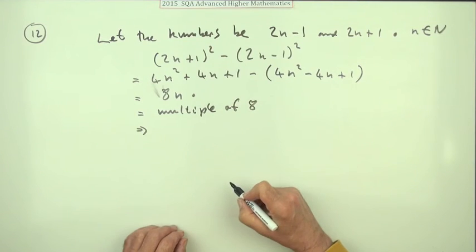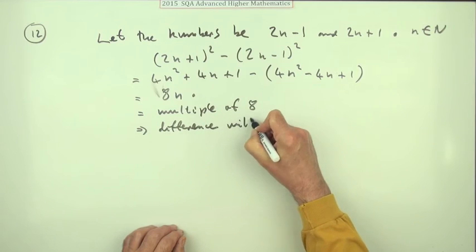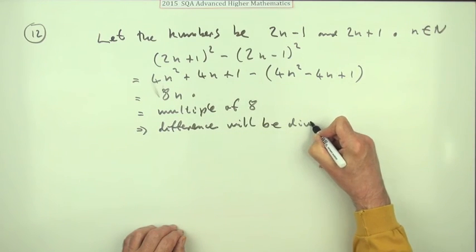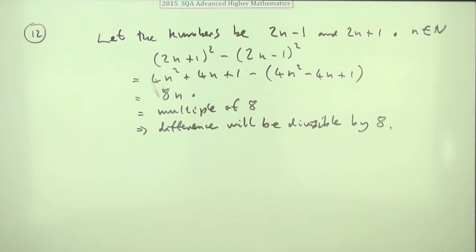So what does that mean? It means it'll divide by 8. I'll just say that the difference will be divisible by 8. And that's the last mark. That was quick.